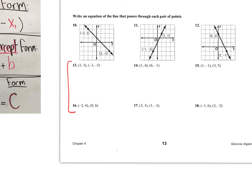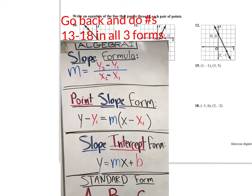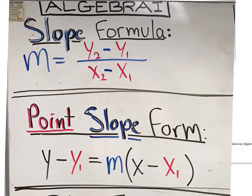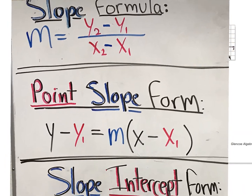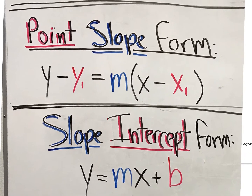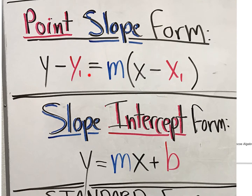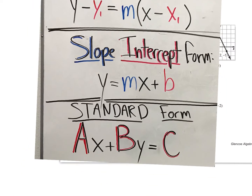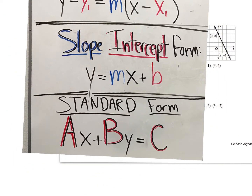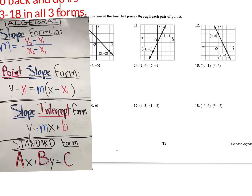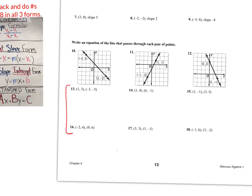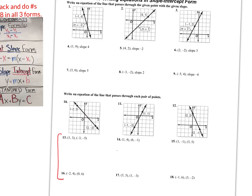All three forms. You're going to use everything on the board. You're going to use the slope formula. Once you get the slope, you're probably going to use point-slope form. Once you have it in point-slope form, you can change it to slope-intercept by distributing and moving things over. And then you can change it to standard form by moving the x's and y's to the left side and the number by itself to the right side, and of course getting rid of fractions or decimals.